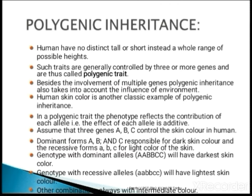In human beings, unlike the pea plant, you cannot see exactly tall or dwarf. You can see a variation of height. Similarly, when you observe color in human beings, you can see variation of colors — not only dark or fair. You can see variation of skin color. This is because that feature is controlled by three or more genes, and you call that a polygenic trait.